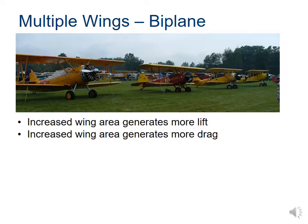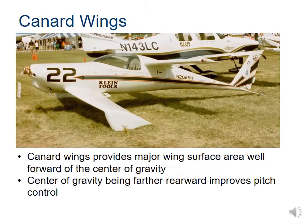A biplane generates more lift because more wing area gives more lift — but it also gives more drag, so it's not ideal for efficiency. The canard's center of gravity is positioned further backwards, giving better control in pitch, which may be beneficial for certain airplane jobs. The landing gear on a canard is often placed behind the front wing so it reduces drag on the plane.